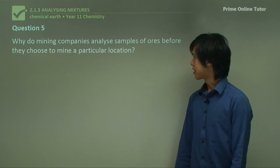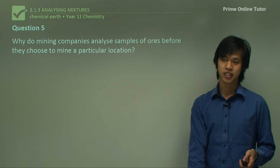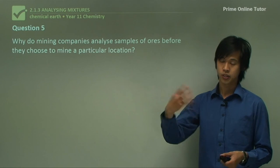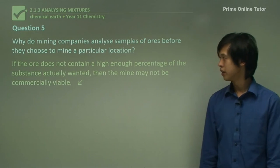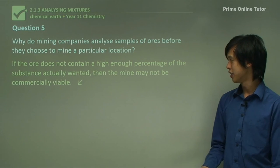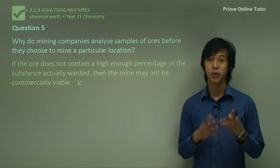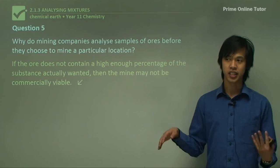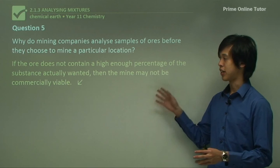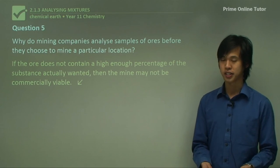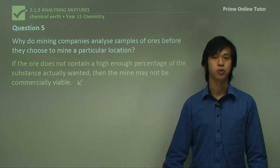So why do mining companies analyze samples of ores before they choose to mine a particular location? So we basically take what's called a core, we dig into the ground, and we take out a sample, and we analyze it to see what's inside this particular mineral ore. So why would we want to do that? If the ore does not contain a high enough percentage of the substance I actually wanted, then the mine may not be commercially viable. So if we realize that our sample has a very low concentration or a low percentage of what we actually want to mine, say iron or copper, then it may not be worthwhile to dig and mine that area, because it could cost a lot of money to get very little substance out. So it may not be worthwhile to actually mine this area if we know that the percentage mass of that substance is low. So that's why we look for these kind of little tests before we go and invest a lot of money into big mining operations.